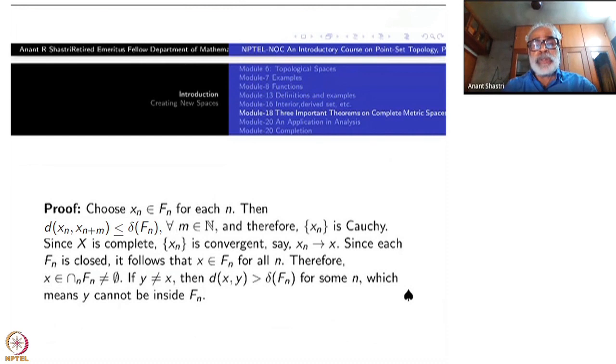Therefore, this can be made less than epsilon. So as soon as this is a Cauchy sequence, this will be also Cauchy sequence. So we have got a Cauchy sequence. But now I use that X is complete. Therefore, x_n is convergent. So let us take x to be the limit.